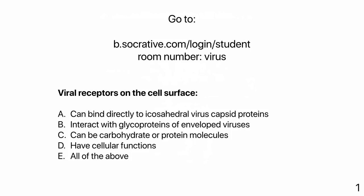Our first question is about viral receptors on the cell surface. They can bind directly to icosahedral virus capsid proteins; they can interact with glycoproteins of enveloped viruses; they can be carbohydrate or protein molecules; they have cellular functions — and the answer is all of the above. Every answer is correct. I've told you each of those things so far.